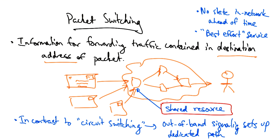This notion of packet switching and statistical multiplexing — allowing multiple users to share a resource at the same time — was really revolutionary, and it is one of the underlying design principles of the internet that has persisted.